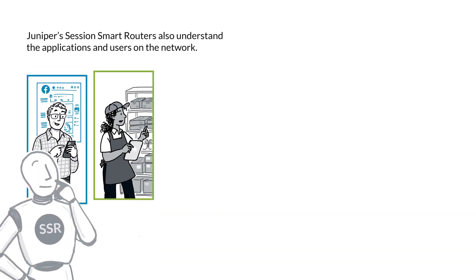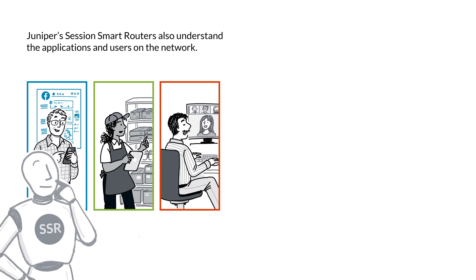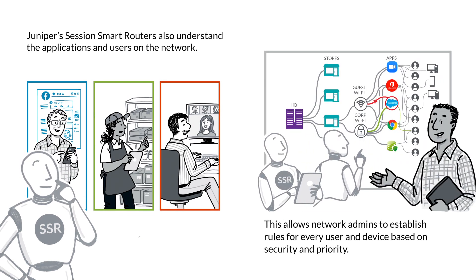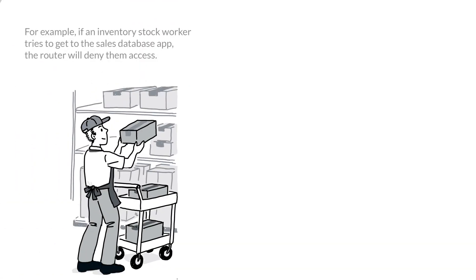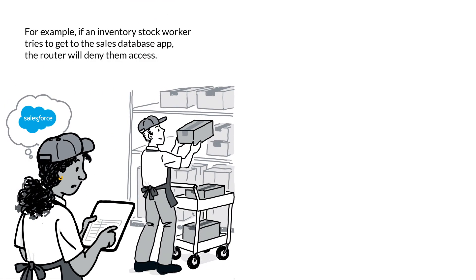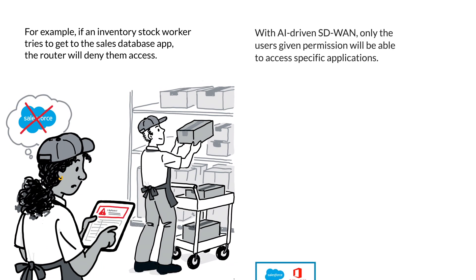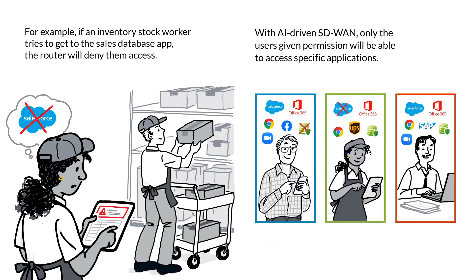Juniper's session smart routers understand the applications and users on the network. This allows network admins to establish rules for every user and device based on security and priority. For example, if an inventory stock worker tries to get to the Sales Database app, the router will deny them access. With AI-Driven SD-WAN, only users given permission will be able to access specific applications. This is called Zero Trust Network Access, or ZTNA.